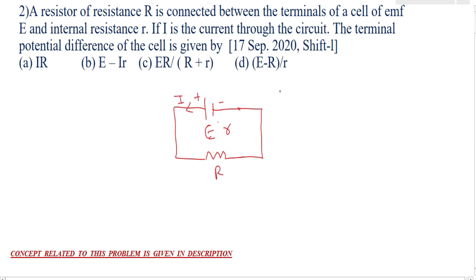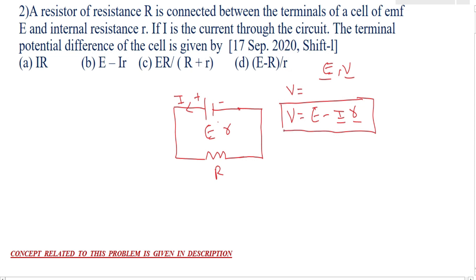He is asking us to find the formula for terminal potential. You have to be clear: there is a lot of difference between EMF of the cell and terminal potential difference. The EMF is given by E, whereas terminal potential difference is denoted by V. The relation is: V equals E minus I times small r, where I is the current and small r is the internal resistance. This formula is valid when the cell is discharging. Here it is the case of discharging, so terminal potential difference V equals E minus IR.